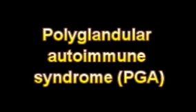PGA goes by a confusing array of other names, including autoimmune polyglandular syndrome (APS), autoimmune polyendocrinopathy candidiasis ectodermal dystrophy (APECED), autoimmune polyendocrinopathy syndrome, hypoadrenocorticism with hypoparathyroidism and superficial moniliasis, and polyglandular deficiency.